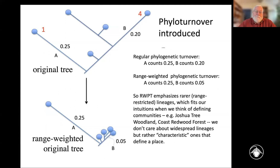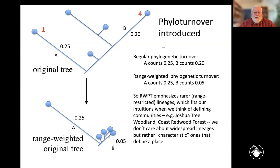You can have phylo-Jaccard and phylo-Sorensen and other metrics. When we do phylogenetic turnover, we're talking about how different is the phylogenetic tree present in two places. The top tree here illustrates phylogenetic turnover per se — comparing two sites to say how different they are by counting up the branch lengths that are the same on both trees and those that are different. A particularly interesting kind is range-weighted phylogenetic turnover, where instead of doing the phylogenetic turnover on the original tree, we do it on the range-weighted tree, counting the more range-restricted branches more than the widespread ones.